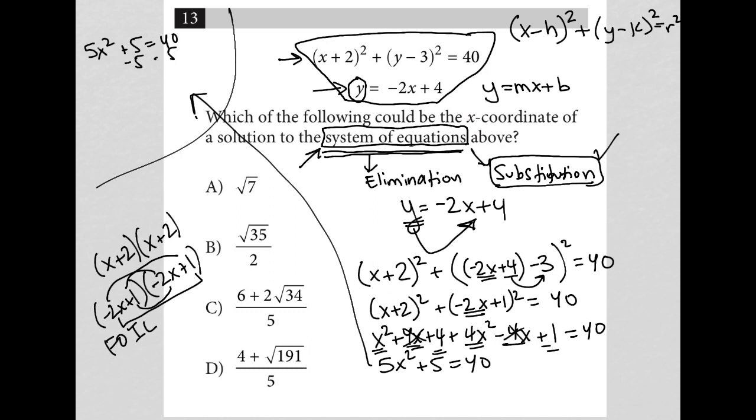Subtract 5 from both sides. I end up with 5x² = 35. Divide both sides by 5, and I end up with x² = 7. And then square root both sides, and I end up with x = √7. Technically plus or minus √7, but usually this test doesn't care about that. And therefore, the question is asking which of the following could be the x-coordinate. So I just solved for x. x is equal to √7.